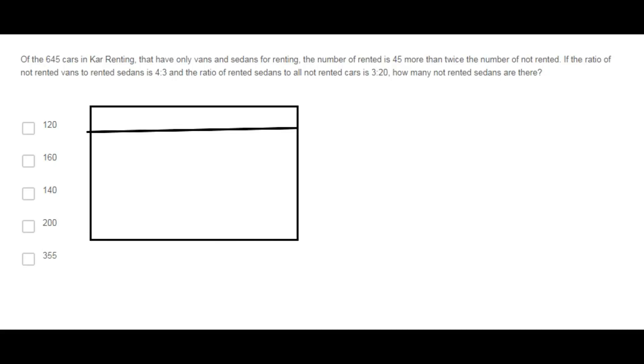Let's use a chart to put all information given in the problem. The columns will be for sedans and vans, the rows will be for rented cars and not rented cars. There are a total of 645 cars.